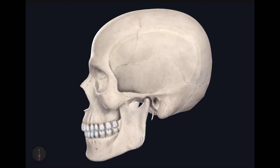The first craniometric point I'm going to identify is called the jugale, and it's located right here in the zygomatic bone. It's located at the intersection of the frontal process of the zygomatic bone and the temporal process of the zygomatic bone. So right here where that junction is, is going to be the jugale.